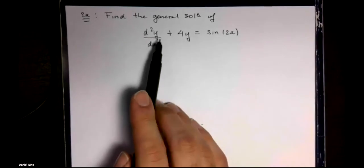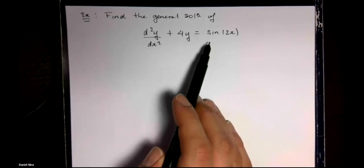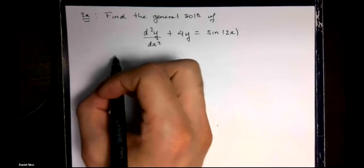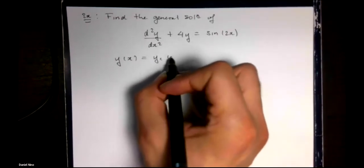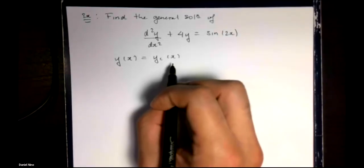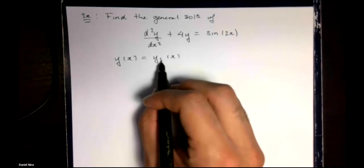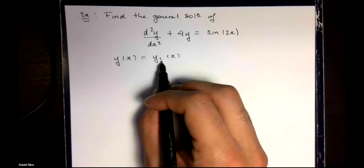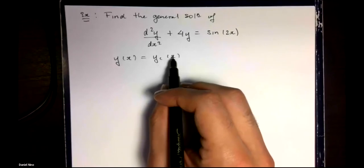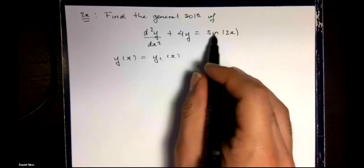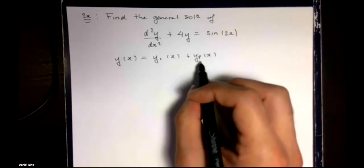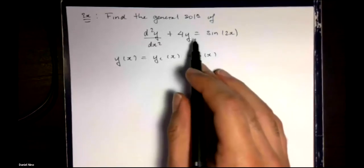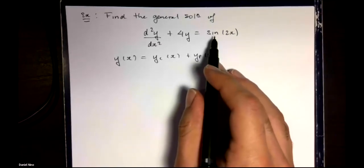We'd like to find the general solution for this differential equation. Recall that the general solution has a complementary solution, denoted by y sub c, which is a solution to the homogeneous equation when this equals zero, and a particular solution, which is a solution to the non-homogeneous equation when this is not equal to zero.